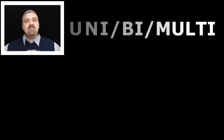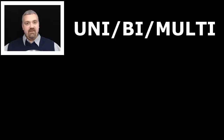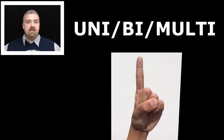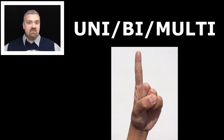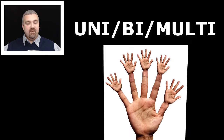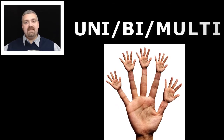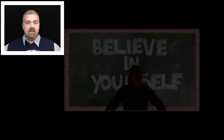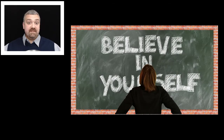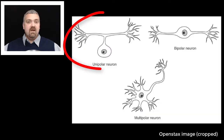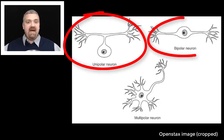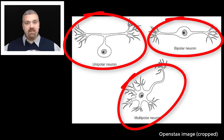Let's cover these next three together: uni, bi, and multi. Uni means one, bi means two, and multi means many. The reason these are important with the nervous system is three very important types of neurons: unipolar neurons, bipolar neurons, and multipolar neurons.